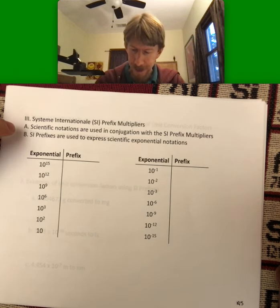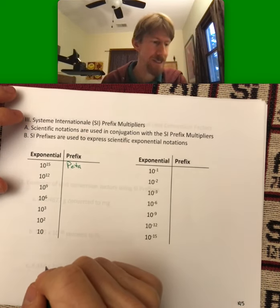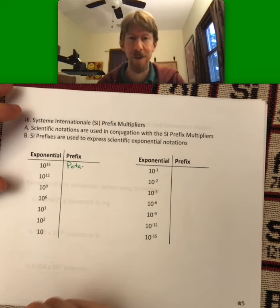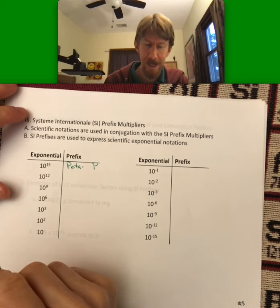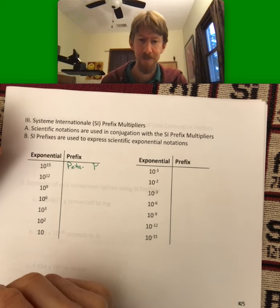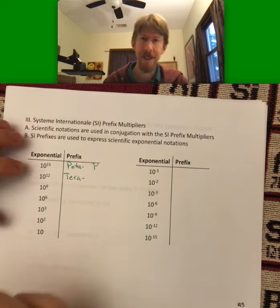For example, if you wanted to say 10 to the 15, that's positive 15, the prefix is peta. Peta is going to have the abbreviation with a dash, capital P. I'll do all the ones with capital letters as caps so you can know. 10 to the 12th is going to be tera, like a terabyte.